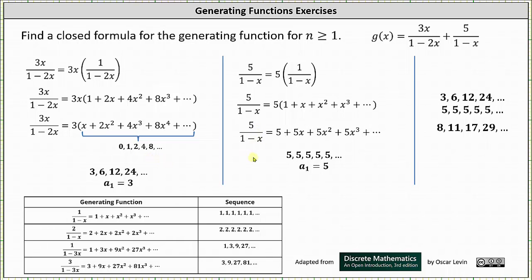The closed formula for the terms of the constant sequence of 5s is just 5, which means the closed formula for the sum of the sequences is going to be in the form a sub n equals 3 times some power of 2 plus 5. The closed formula ends up being a sub n equals 3 times 2 to the power of n minus 1, plus 5. Remember the first term is a sub 1, so when n equals 1, we have 3 times 2 to the power of 0, which is 3, plus 5, giving a sum of 8.